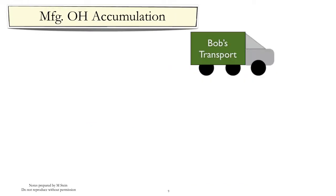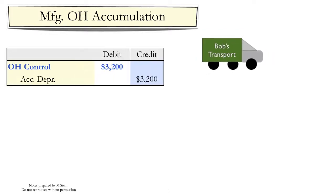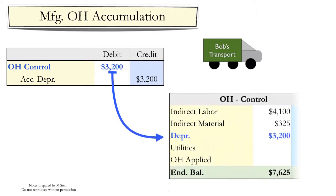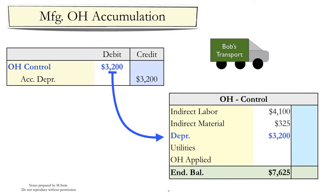Overhead is treated somewhat differently. In order to better understand and control overhead costs, the elements of overhead — such as the depreciation on manufacturing equipment — are often accumulated in an overhead control account before the costs are assigned to work in process. So, for example, the depreciation on the truck is added to the overhead control account rather than added directly to work in process.